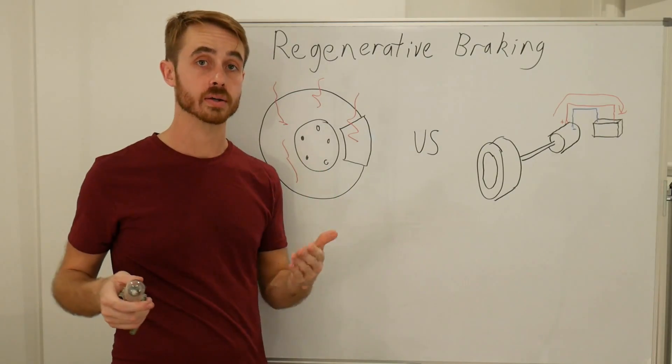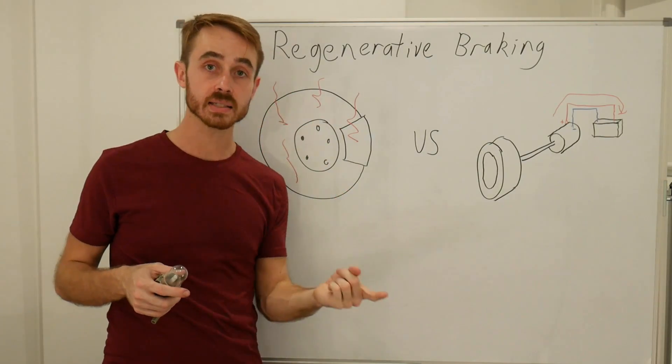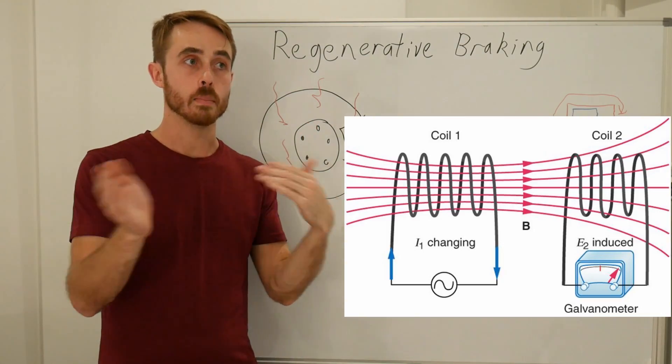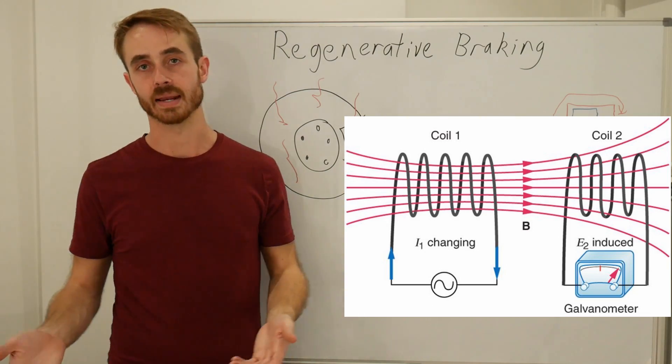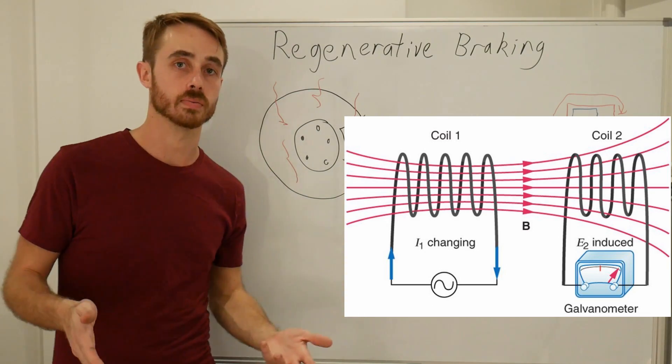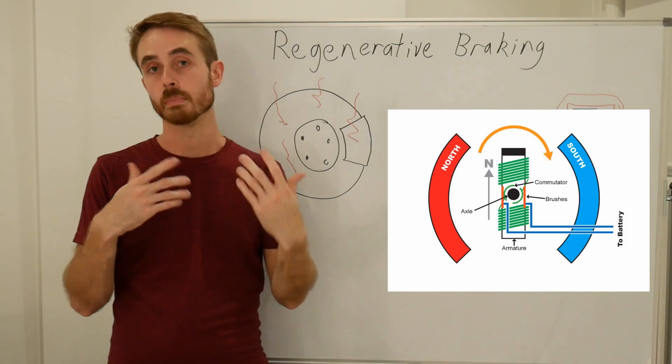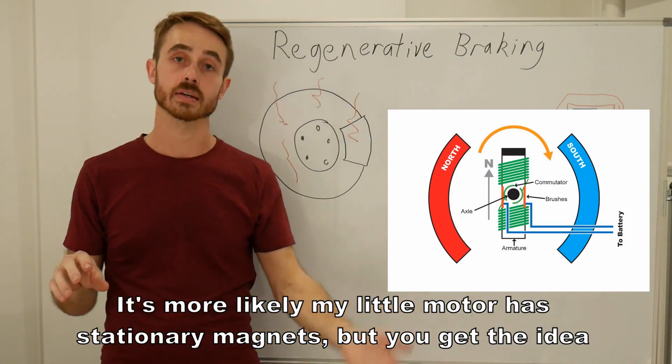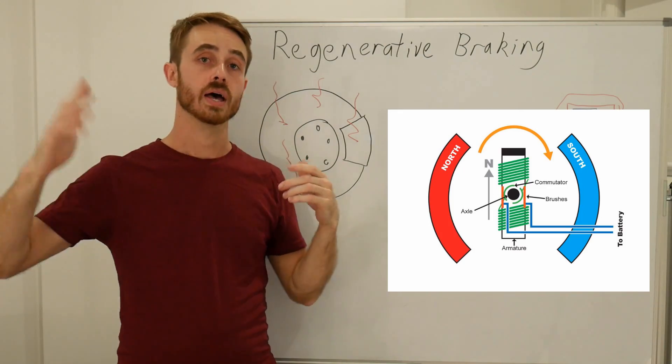Now, the reason this works is a combination of inductance and what's known as back EMF. Inductance is basically the property that a moving electrical current creates an electromagnetic field, which can affect the objects around it. Now, inside my motor are little magnets, and there are also little coils. As I move the magnets past the coils, it will induce a current in them.